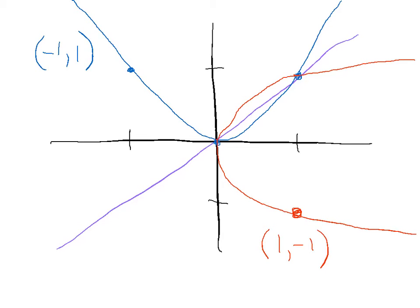The graph actually does intersect with our line of reflection at the point 1 comma 1. So not only is 1 comma 1 a point on our original function, it's also a point of our inverse. And you'll see the same thing happens with the point 0 comma 0 — it's a point in the function and in the inverse function, and they intersect with our line of reflection Y equals X.